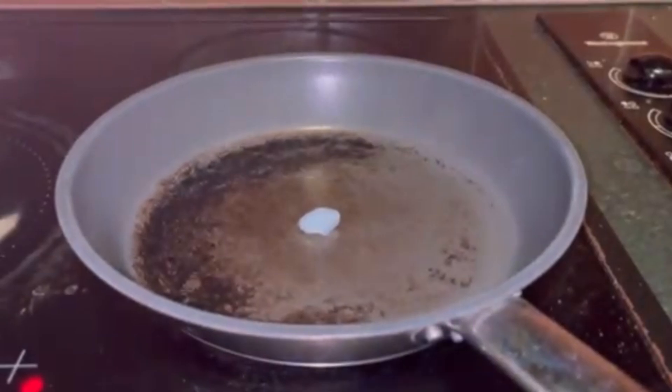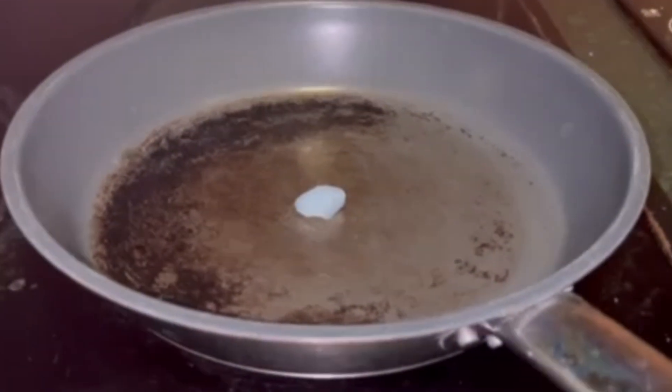But why is aerogel so good at insulating? Well, that's because of its nanoscale pores. The width of the pores is smaller than the distance air molecules travel, before colliding with something. So it's really hard for those hot moving molecules below the aerogel to get through to the top, and transfer the heat there.